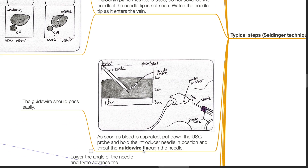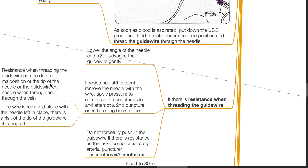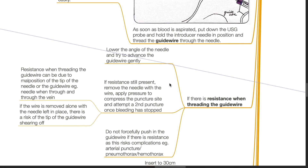As soon as blood is aspirated, put down the ultrasound probe, hold the introducer needle in position, and thread the guide wire through the needle. The guide wire should pass easily. If there is resistance when threading the guide wire, lower the angle of the needle and try to advance it. If resistance is still present, remove the needle with the guide wire, apply pressure to compress the puncture site, and attempt a second puncture once the bleeding has stopped.